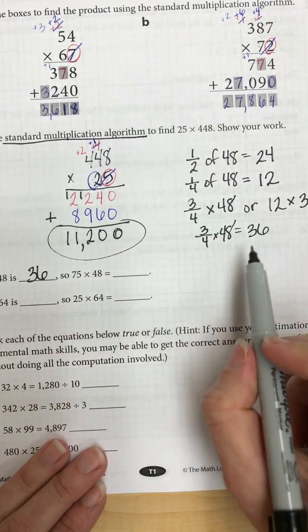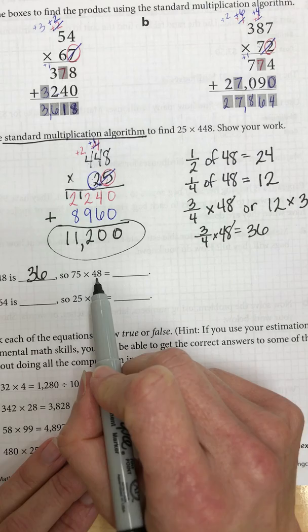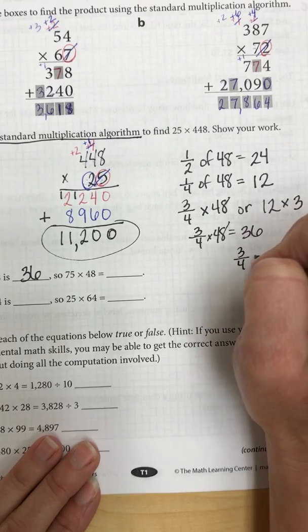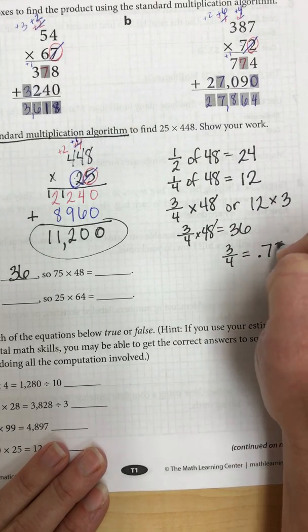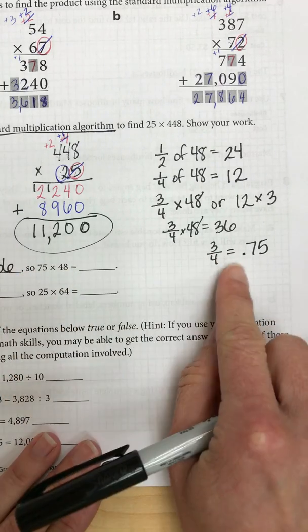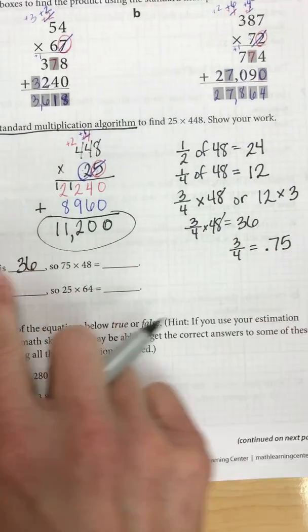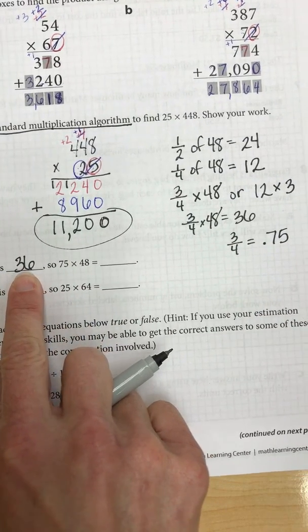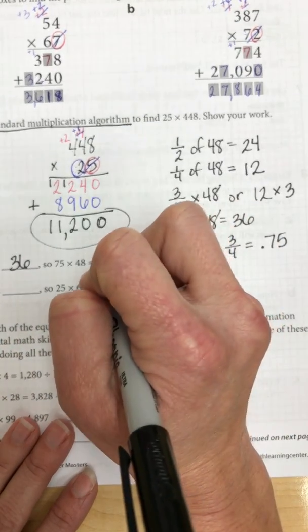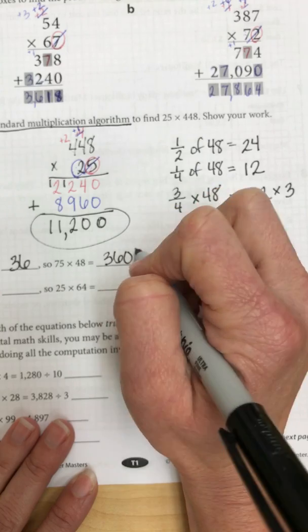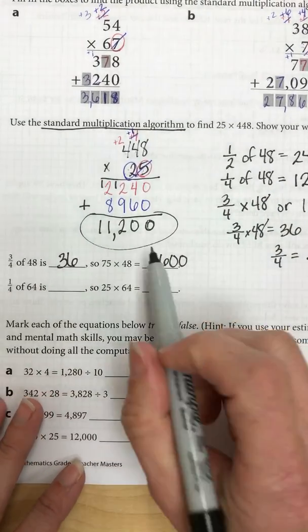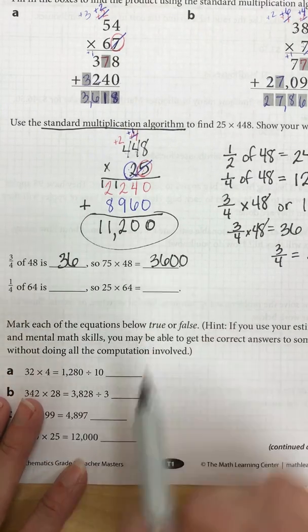So 75 times 48, how can I use this information to find the answer for this one? Well, 3 fourths of a dollar equals 75 cents or 75 hundredths. So if 3 fourths of a dollar equals 75 hundredths and 3 fourths of 48 is 36, all I need to do is move my 36 two decimal places over. So instead of 36, I add two more place values and I now have 36 hundredths. So that's how you can use this problem to help you solve this one.